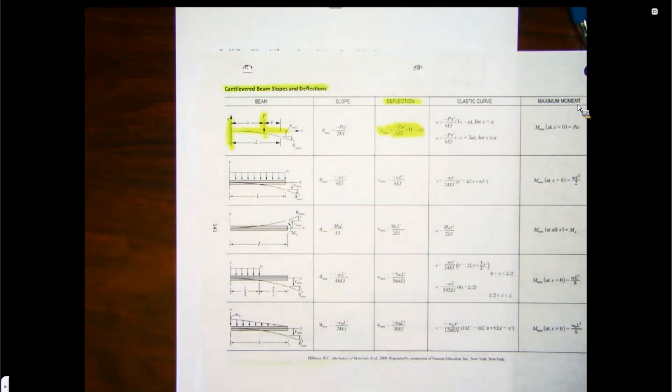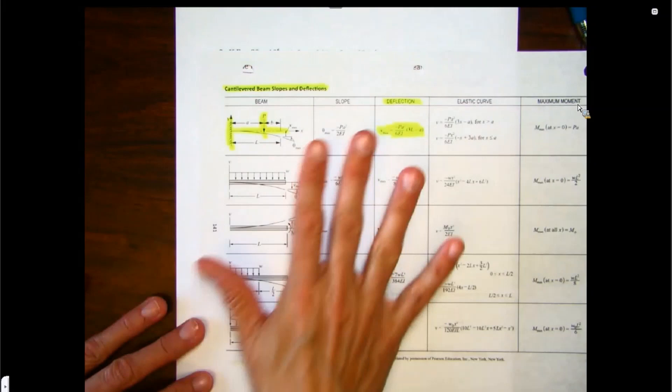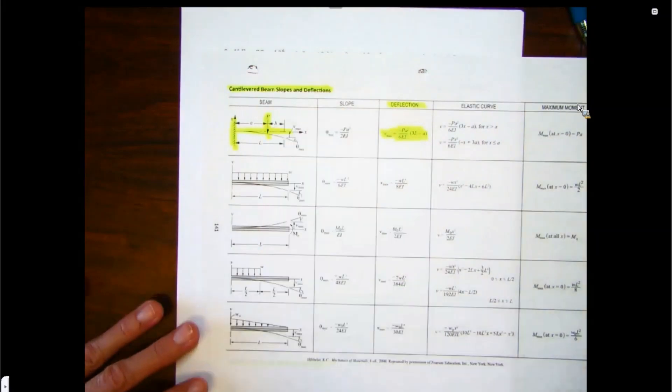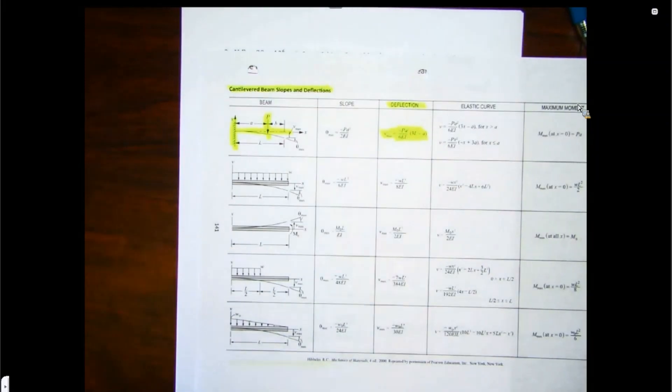But there is on page 140 simply supported beam deflection diagrams as well. So somehow I put that in the wrong page in my book, but anyway, we don't need that. We're going to look at page 141, but just know that on page 140 are the simply supported beams as well.